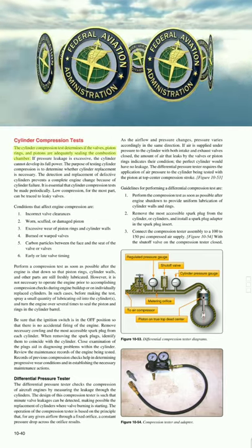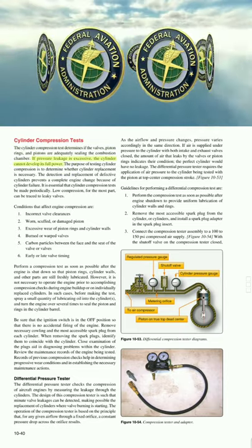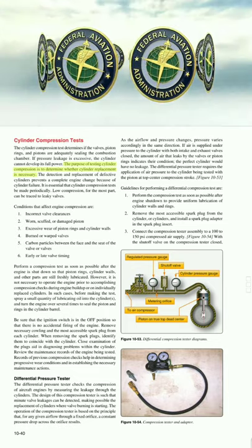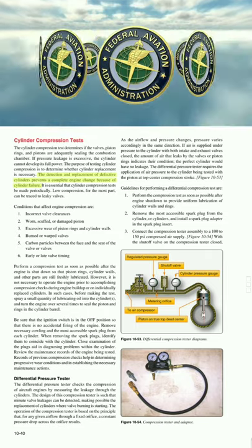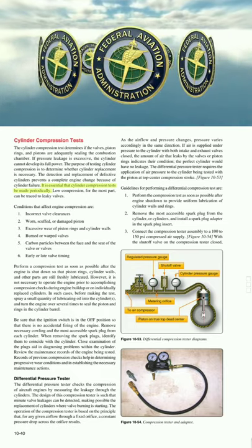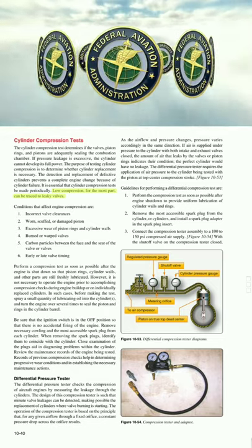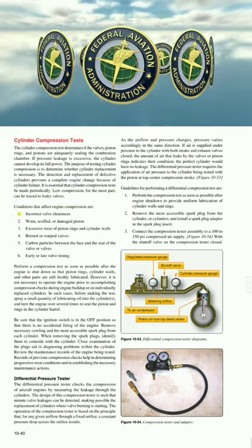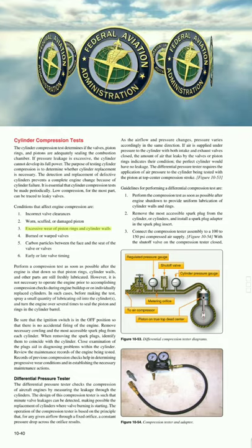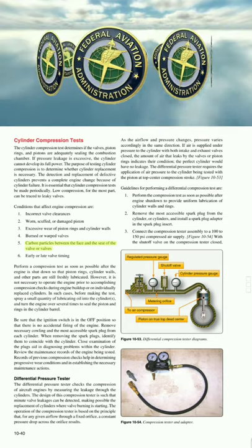The cylinder compression test determines if the valves, piston rings, and pistons are adequately sealing the combustion chamber. If pressure leakage is excessive, the cylinder cannot develop its full power. The purpose of testing cylinder compression is to determine whether cylinder replacement is necessary, and the detection and replacement of defective cylinders prevents a complete engine change. Low compression can mostly be traced to leaky valves. Conditions affecting engine compression include: incorrect valve clearances, worn or damaged piston, excessive wear of piston rings and cylinder walls, burned or warped valves, carbon particles between valve face and seat, and incorrect valve timing.